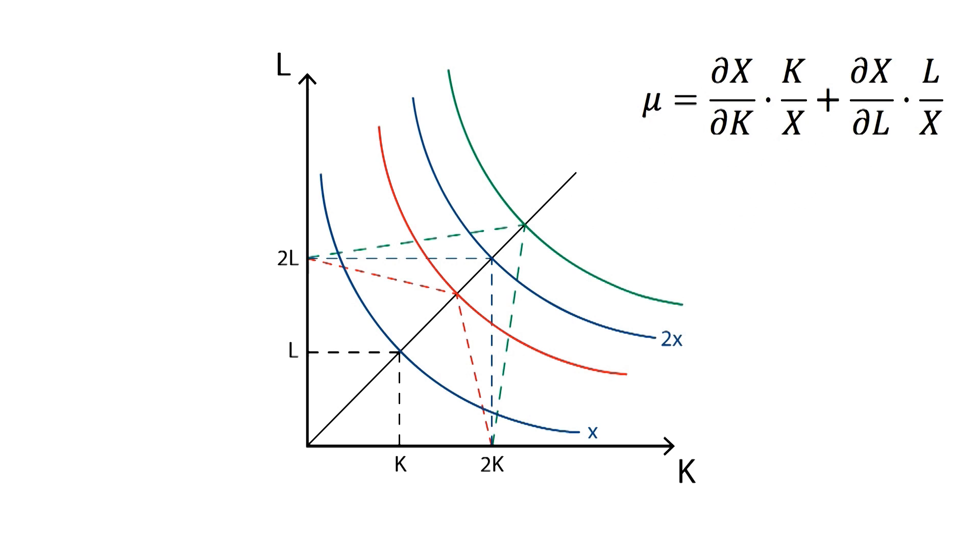We will use the previous graph to better understand the different types of returns to scale. When the value of mu is bigger than 1, we will have increasing returns to scale. When it is equal to 1, we will be dealing with constant returns to scale. Lastly, when mu is smaller than 1, we will have decreasing returns to scale.